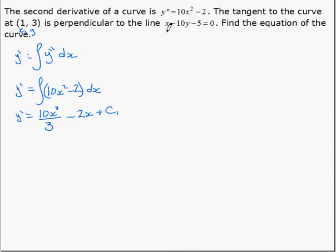y prime refers to the slope of the tangent. We have the equation of a line perpendicular, so we can find the slope of this line, that's perpendicular to the curve, meaning the slope of the tangent line is the negative reciprocal of this one.